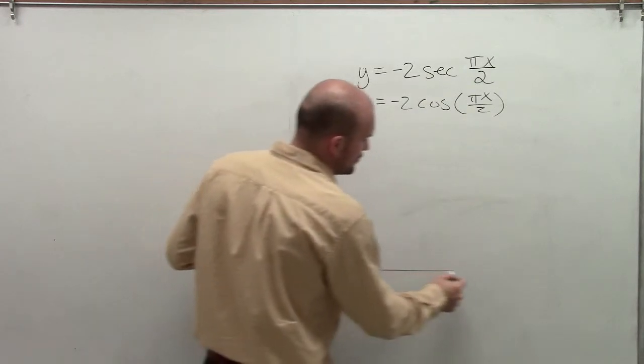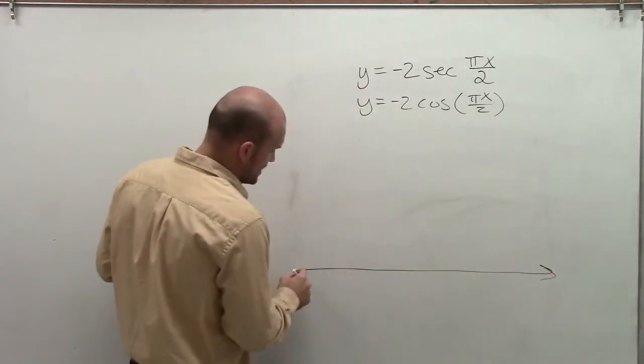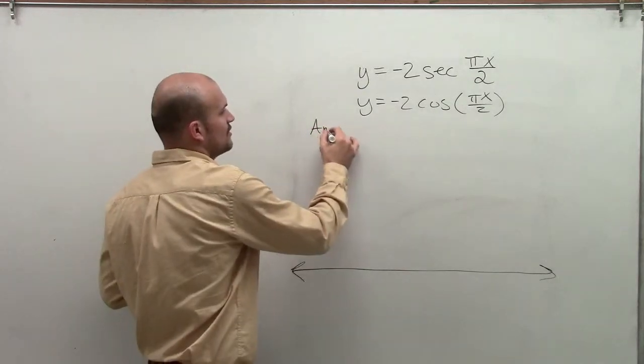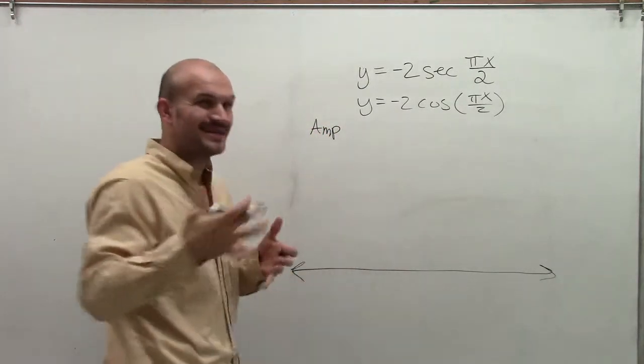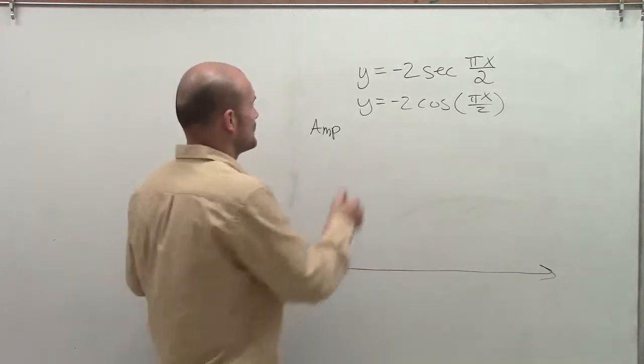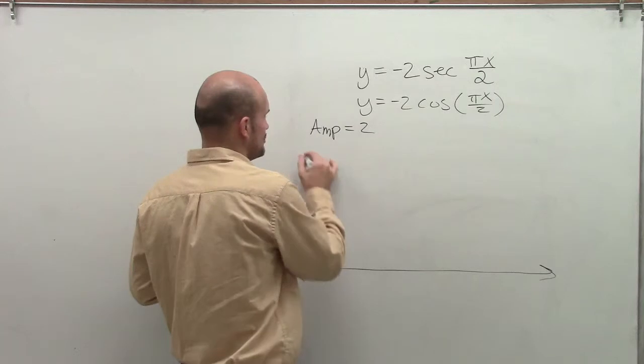And then I'm going to make some necessary changes to my graph. So by graphing the cosine of x, I need to determine what my amplitude is. I'm going to go a little bit quicker with this because we've already done a whole bunch of videos on how to graph cosine. So the amplitude in this problem is 2.